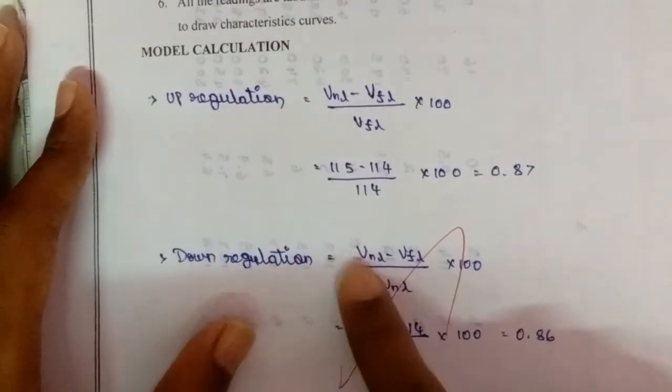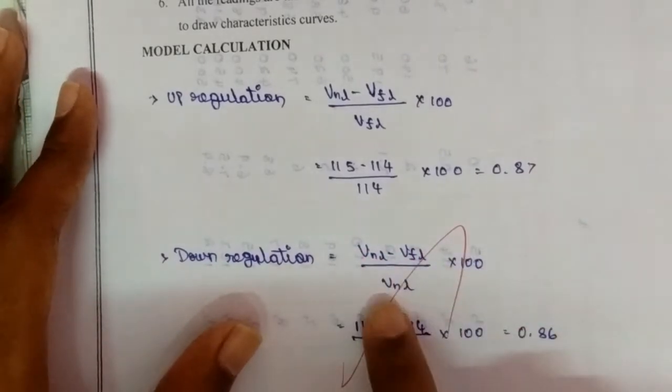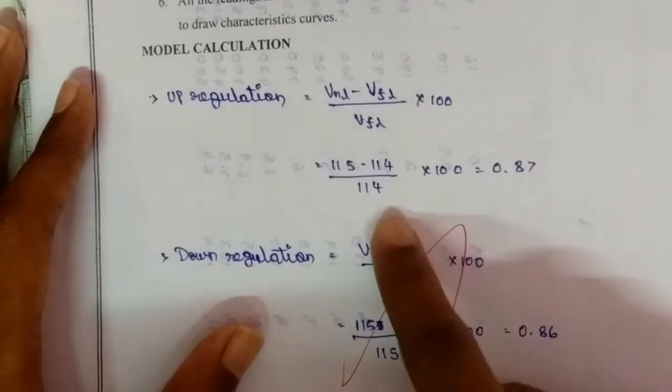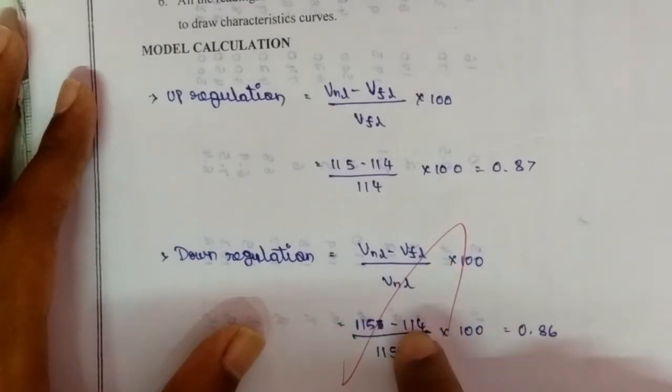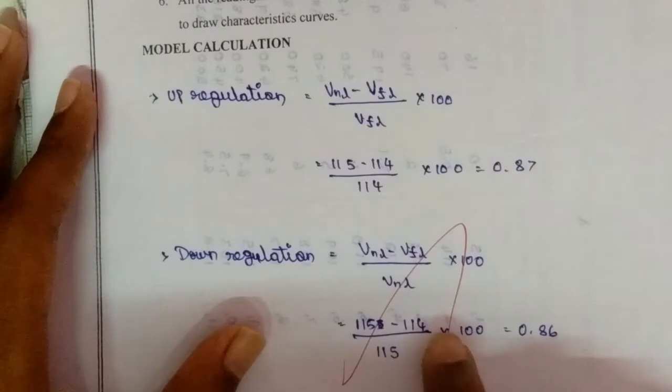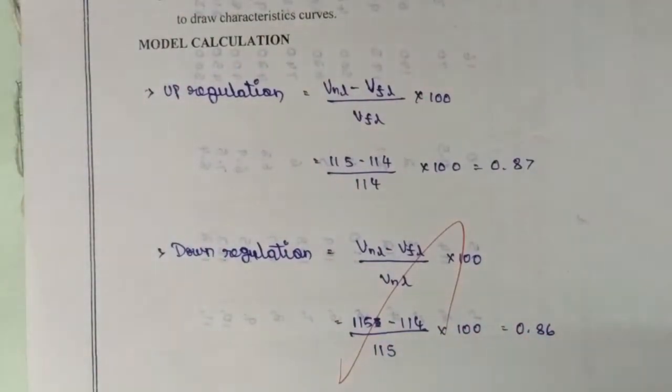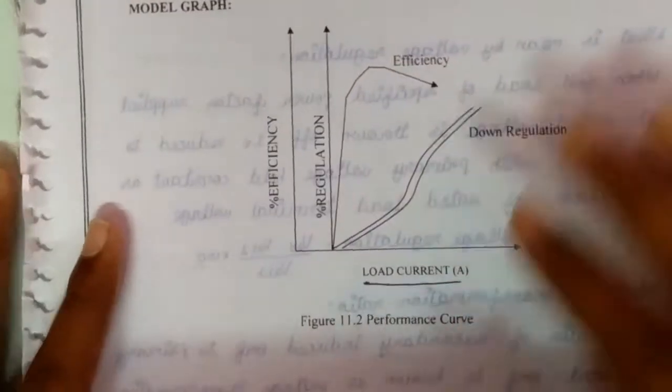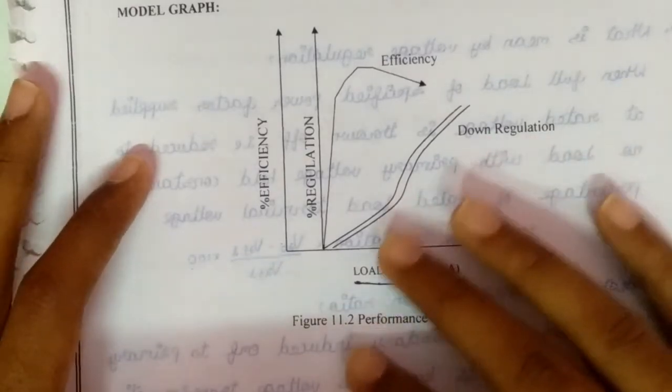For down regulation, the formula is VNL minus VFL by VNL into 100. On substituting the VNL 115, that is no-load voltage, and VFL 114, by 100, we get 0.86.